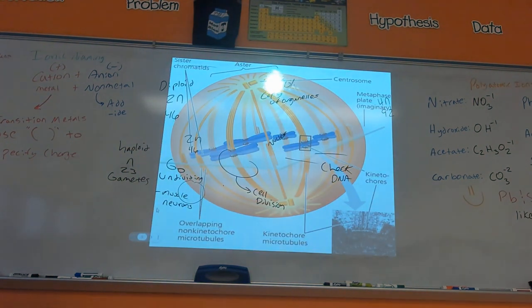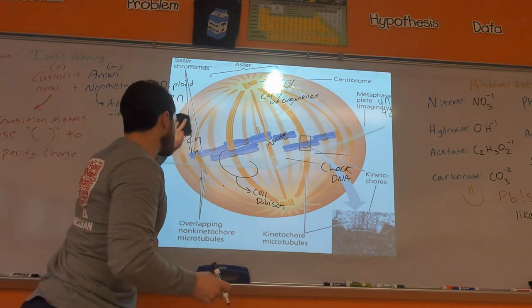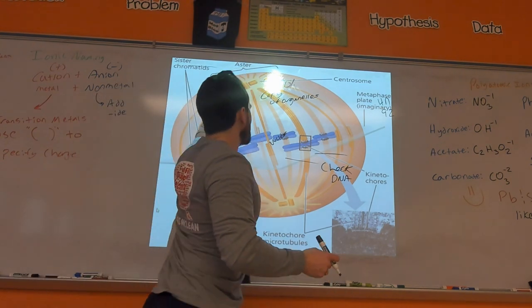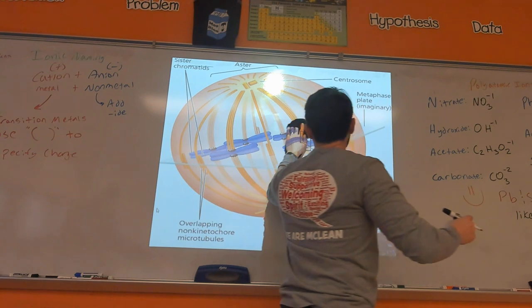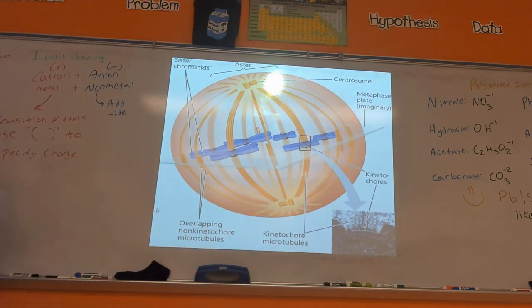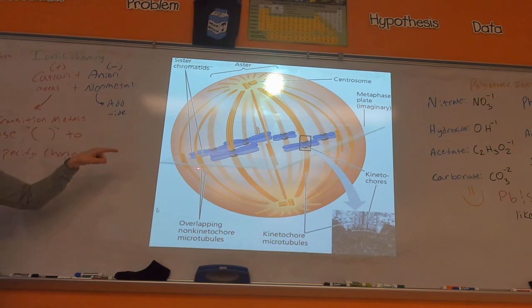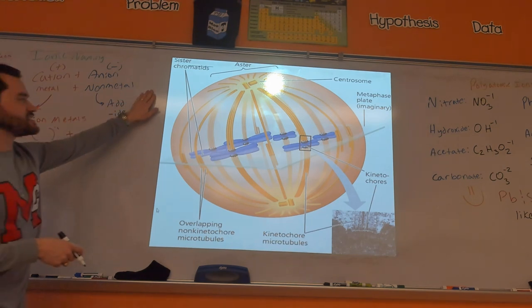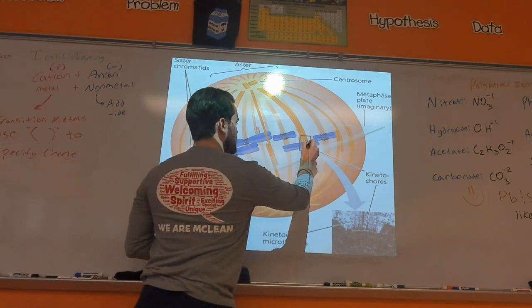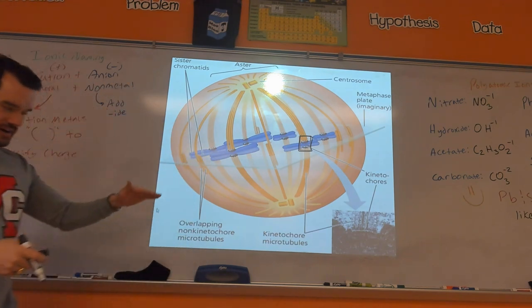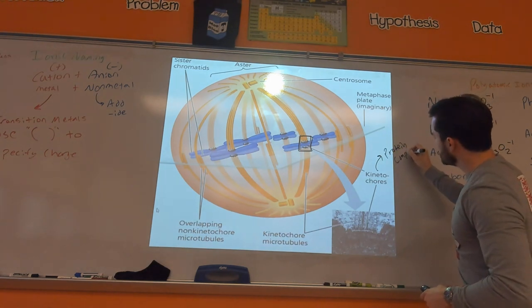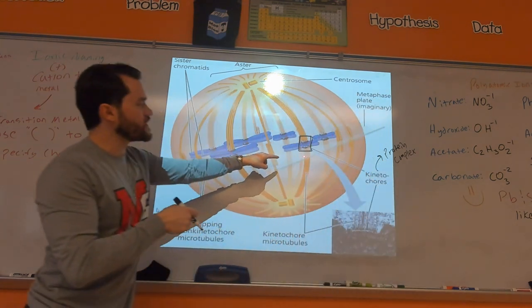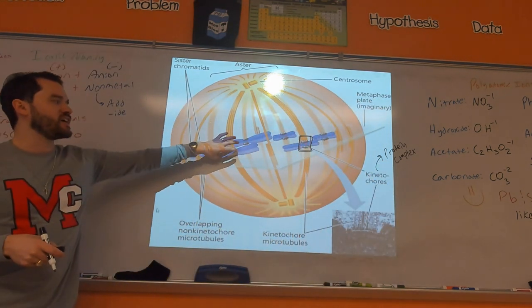Section 9.2B gets into the mitotic spindle. Remember PP MAT: prophase, prometaphase, metaphase, anaphase, and telophase. This slide is showing metaphase — you know it's metaphase because the chromosomes are meeting in the middle of the cell. The purpose of this slide is to focus on what are called the kinetochores — a protein complex where the microtubules connect into the sister chromatids.